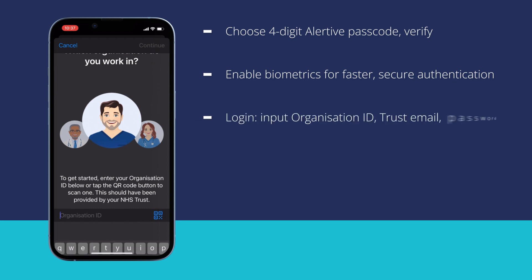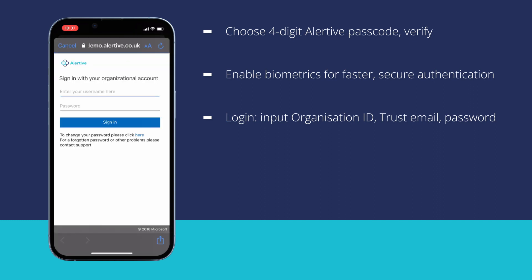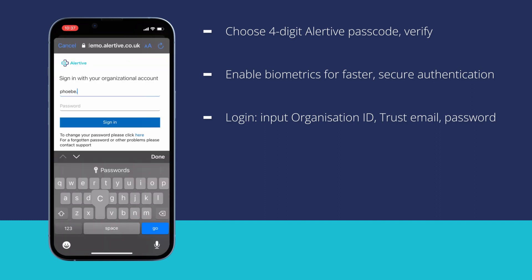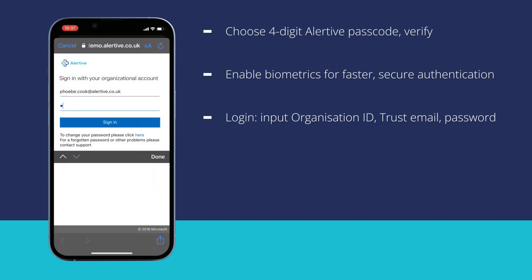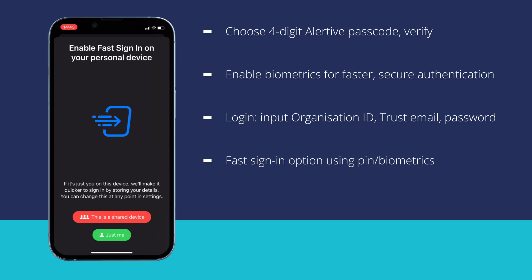To log in, you will need to input your organization ID, which will be provided to you by your organization. You will then be taken to your sign-in page, where you need to enter your trust email address and password. If you are using a personal device or a device only you have access to, then you can enable fast sign-in to get in and out of the application using your PIN or biometrics.